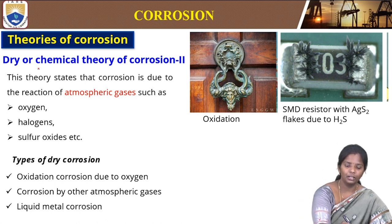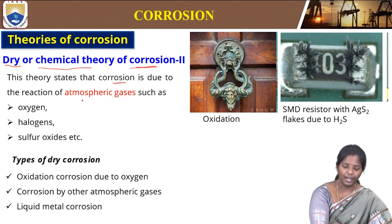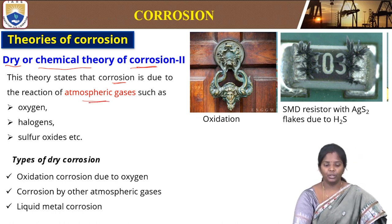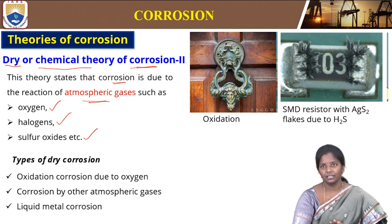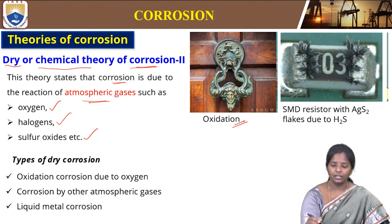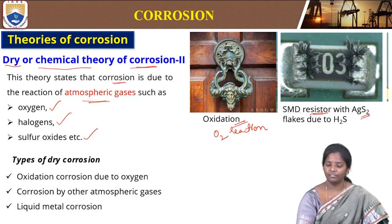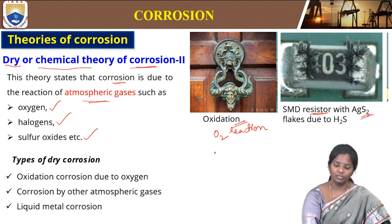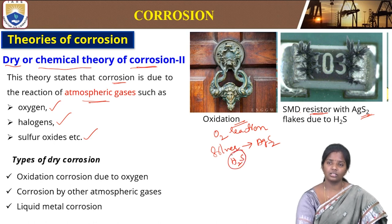In the second theory — dry or chemical theory of corrosion — the theory states that corrosion is due to the reaction of atmospheric gases. Chemically, the metal will be attacked by gases. Oxygen, halogens, or sulfur oxides are some examples. For example, there is a lock on the door that is corroded due to oxygen reaction — the copper is turned greenish. Another example is an SMD resistor with silver disulphide flakes — the silver is converted to silver disulphide due to hydrogen sulphide gas.